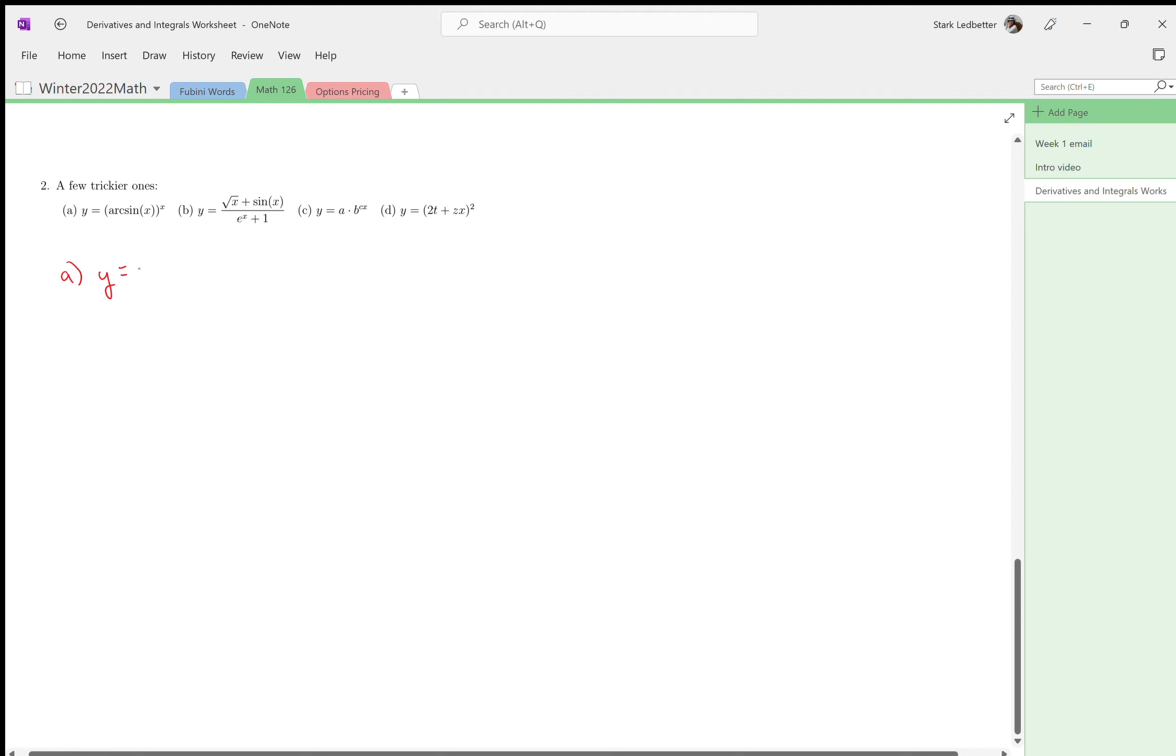Okay, so a couple things I can still do. This is e to the natural log of arc sine of x. Okay, so a word on notation: arc sine and sine inverse have been kind of battling out for which is the better notation.